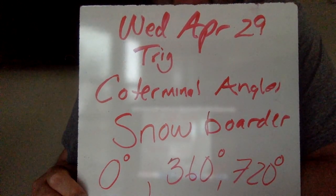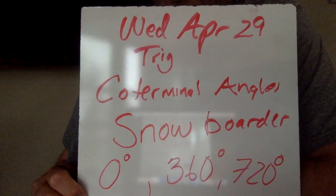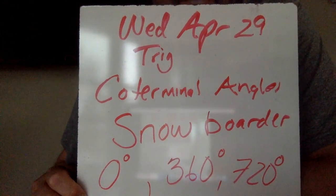And somebody really good does two spins around, 360, 360, a 720. They all end up going the exact same direction. That's what co-terminal angles are.